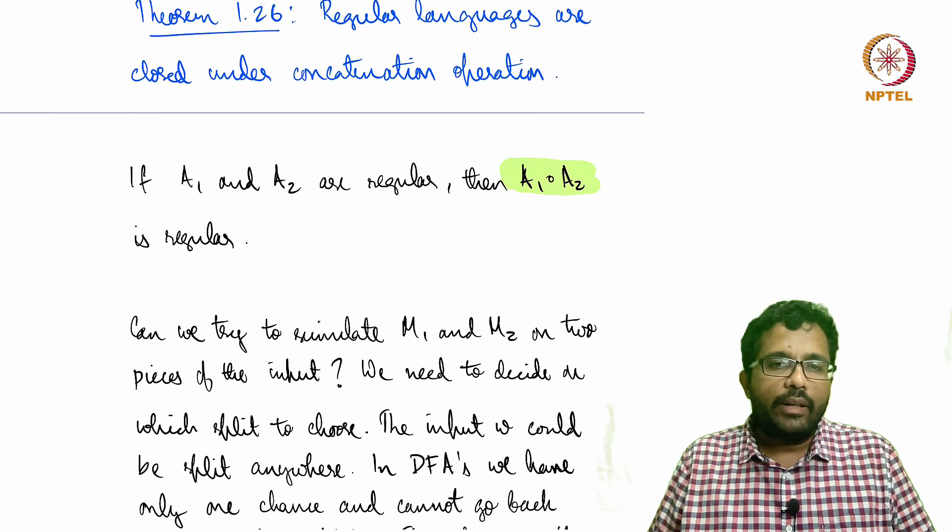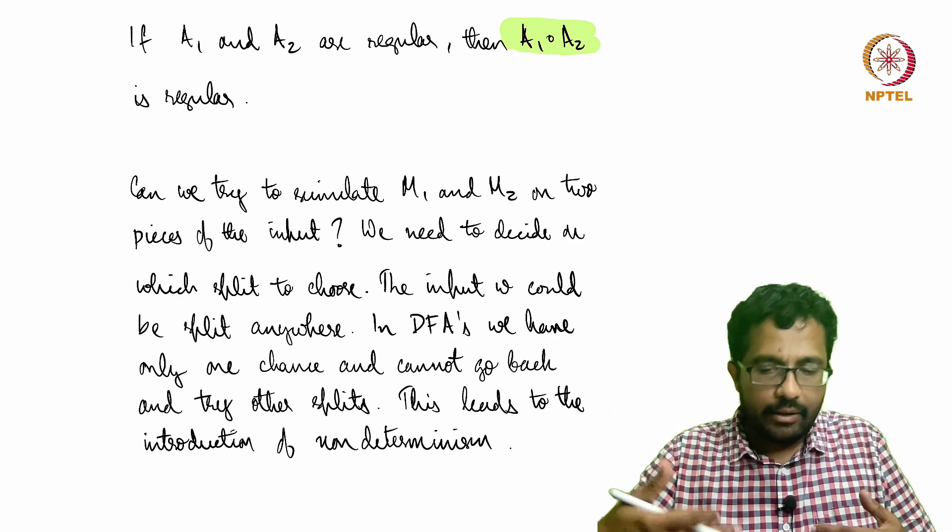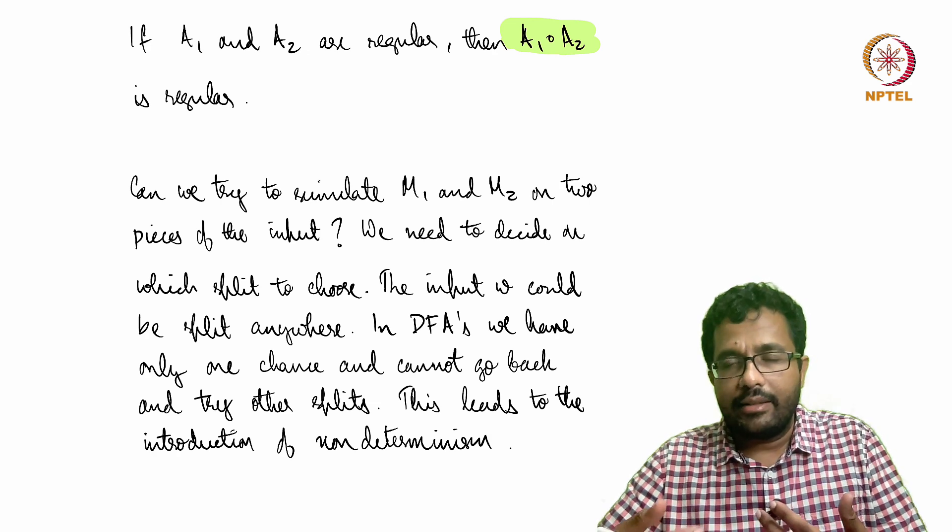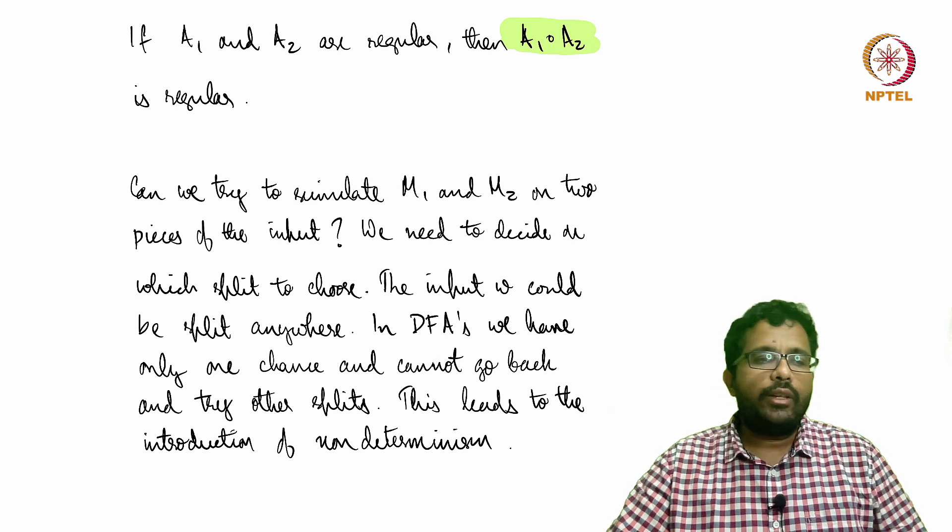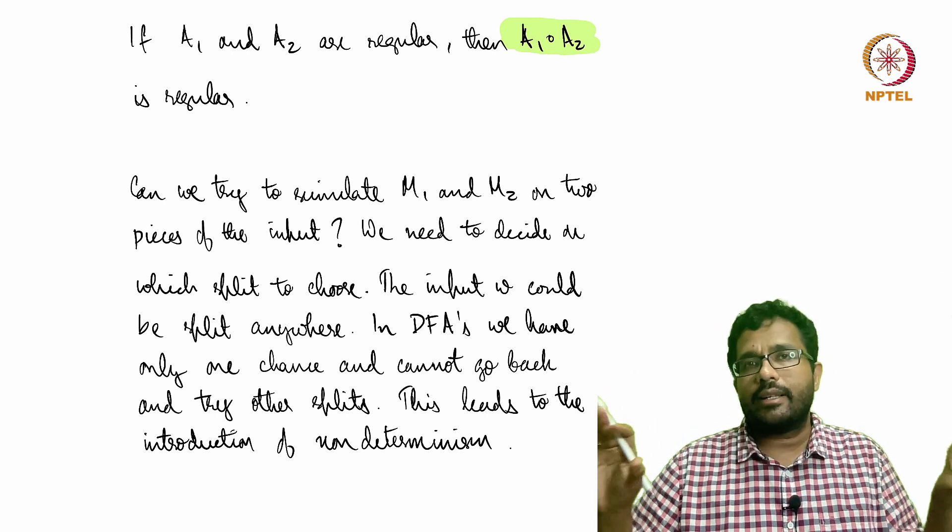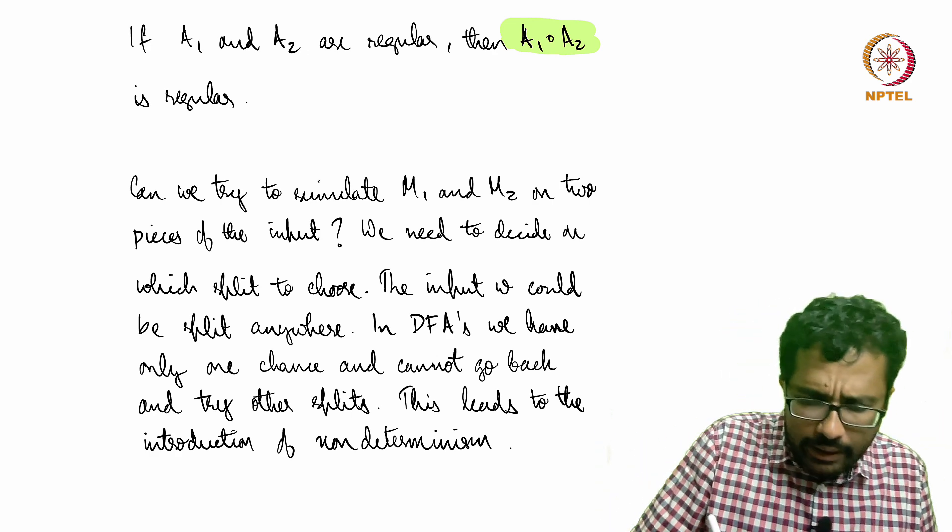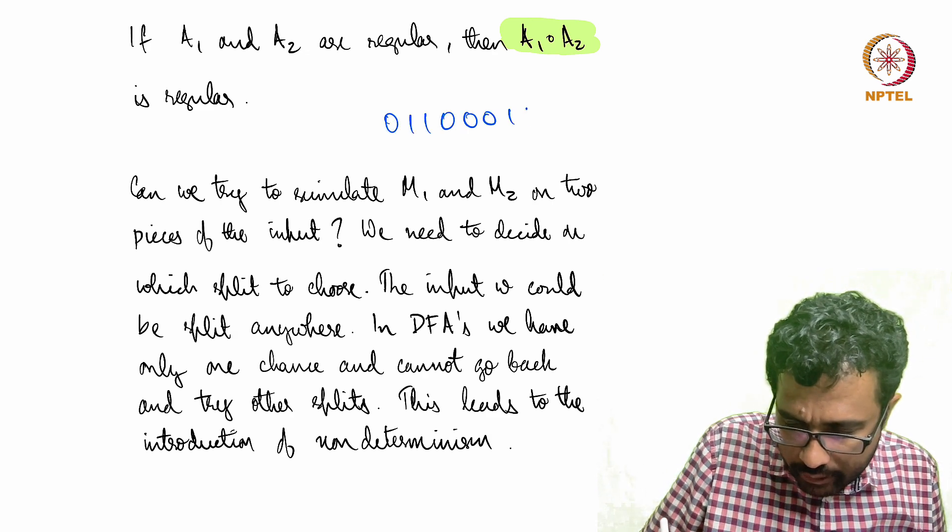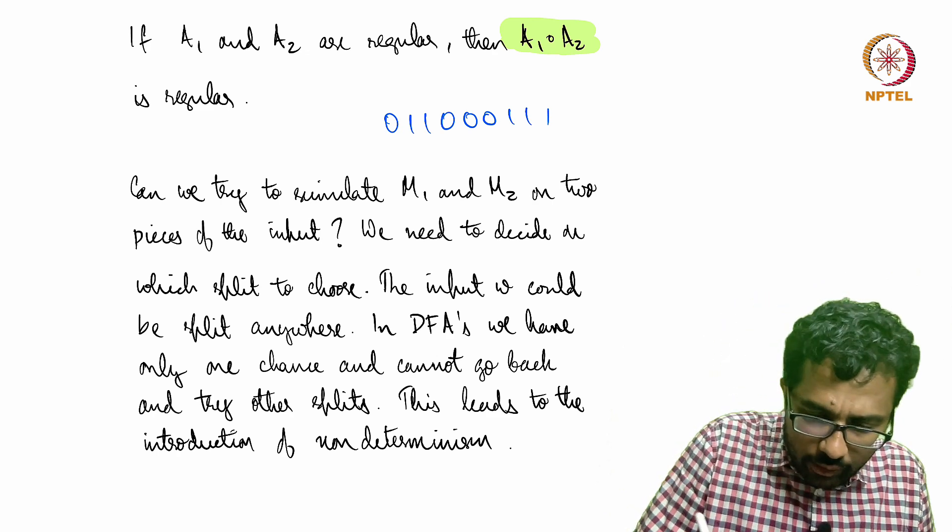The natural thing or the immediate thing to try, now that we have successfully shown union—we have an M1 which recognizes A1, M2 which recognizes A2. Can we combine this somehow? Suppose we get a string, let's say 0110011, something like this.